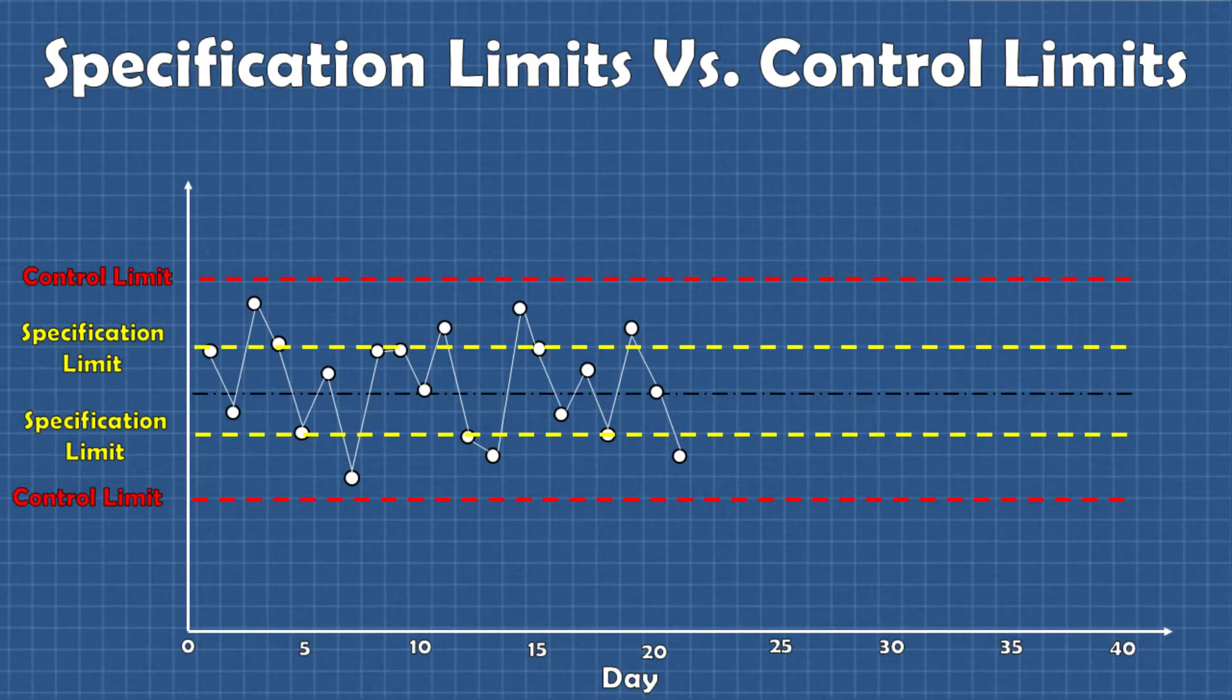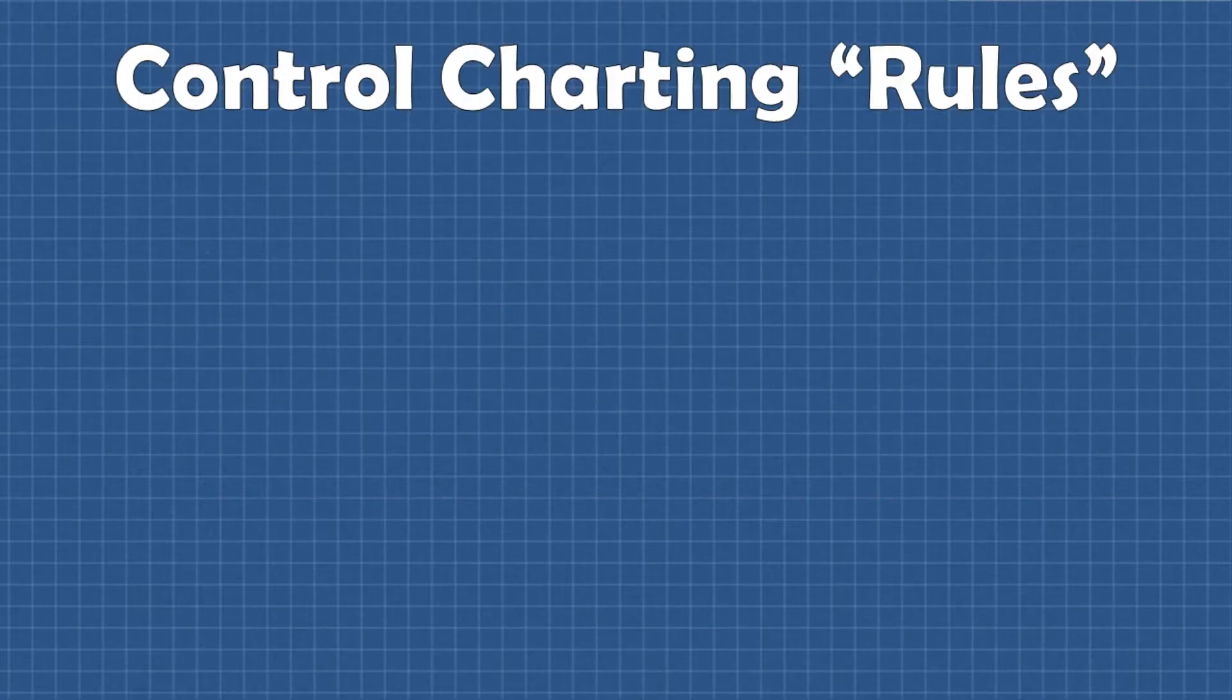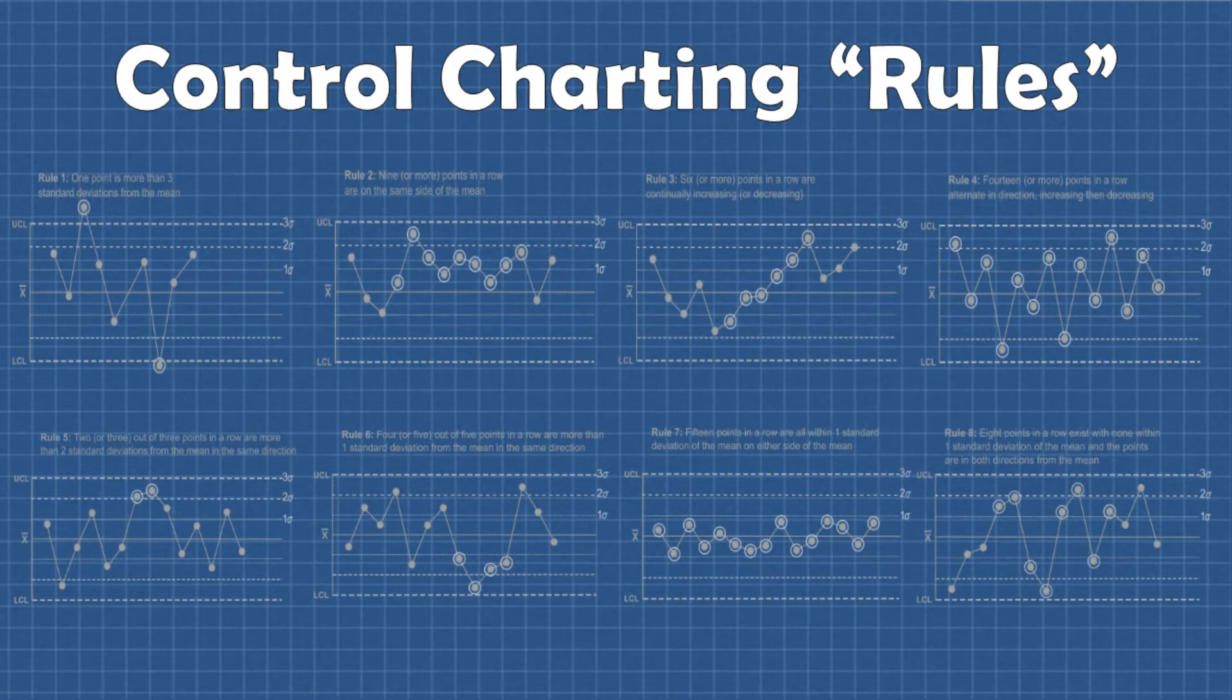So I said that was my last point but I have one more thing that I briefly want to talk about. There are other rules that can be used to determine special cause variation or signal in a process other than just looking to see if a data point falls outside of the control limits. I won't go into detail in this video but there are a total of seven other control charting rules that can help us understand process control. The other seven rules help us detect patterns that can emerge in the data that represent certain special cause phenomena.